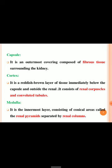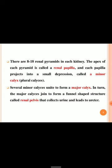The medulla is the innermost layer consisting of conical areas called renal pyramids, separated by renal columns. There are 8 to 18 renal pyramids in each kidney. The apex of each renal pyramid is called the renal papilla, and each papilla projects into a small depression called a minor calyx. Several minor calyces unite together to form a major calyx, which joins to form a funnel-shaped structure called the renal pelvis that collects urine and leads to the ureter.